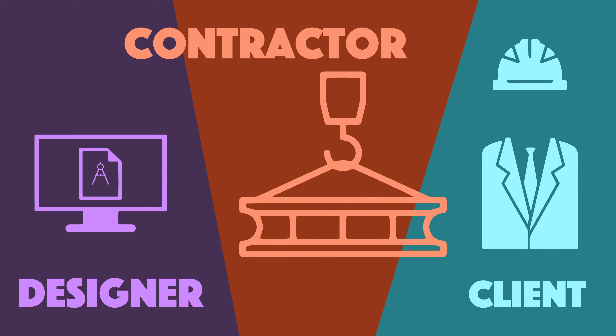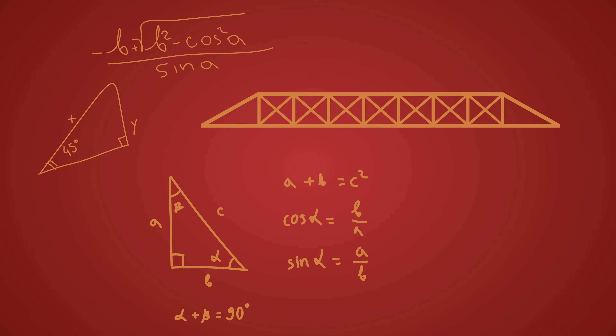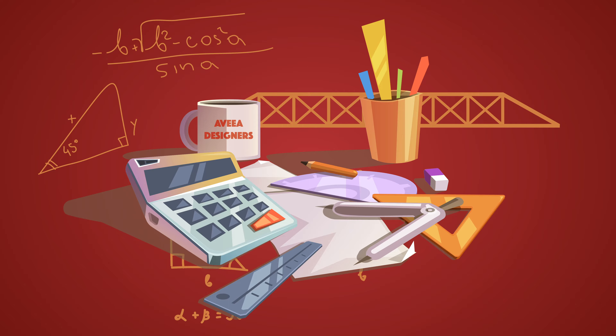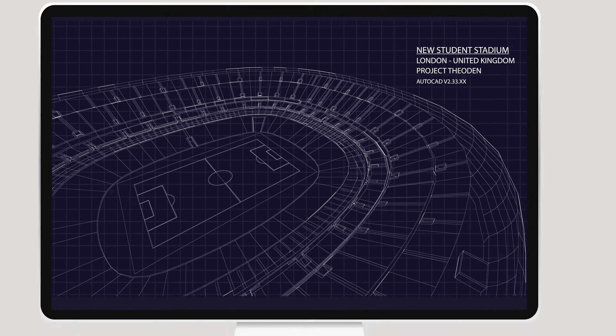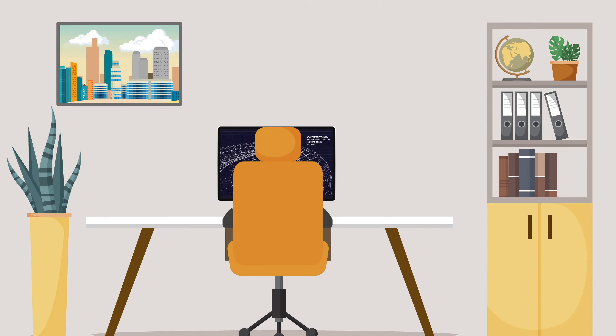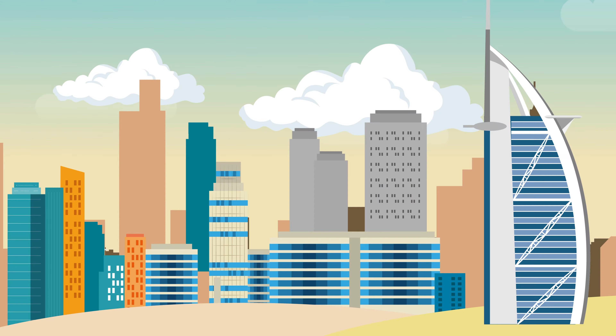There are three main roles as a civil engineer: the designer, the contractor, and the client representative. The designer — it's in the name really. With calculations, standards, and design software such as AutoCAD, designers can visualise the end structure whilst also pushing boundaries with new and exciting innovations.